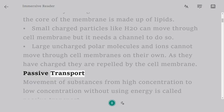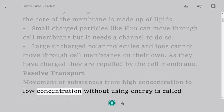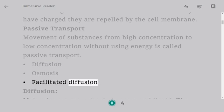Passive Transport: Movement of substances from high concentration to low concentration without using energy is called passive transport. Types include: Diffusion, Osmosis, and Facilitated diffusion.